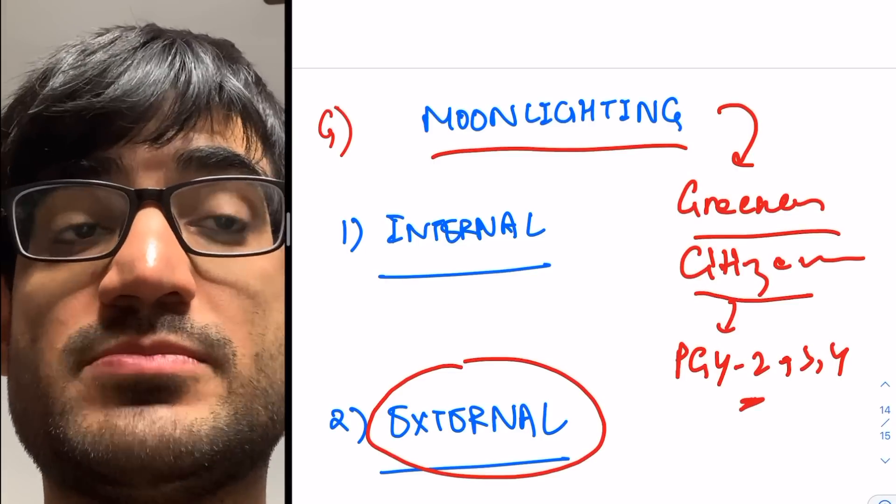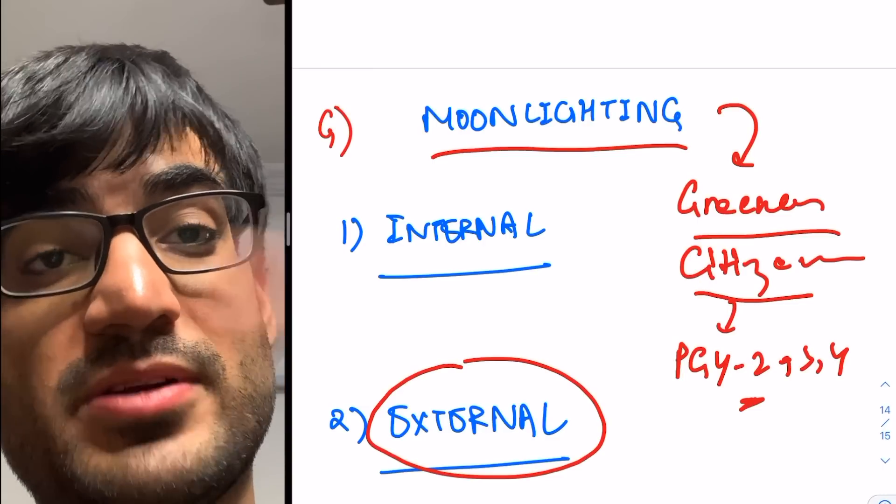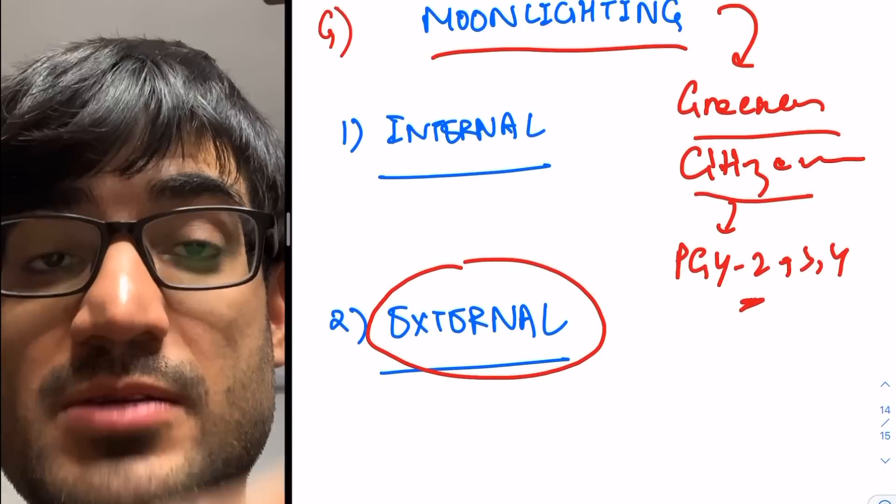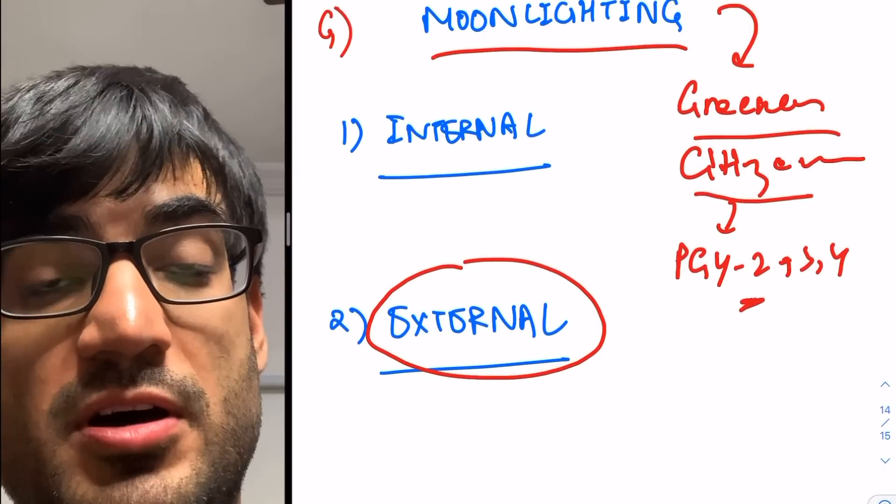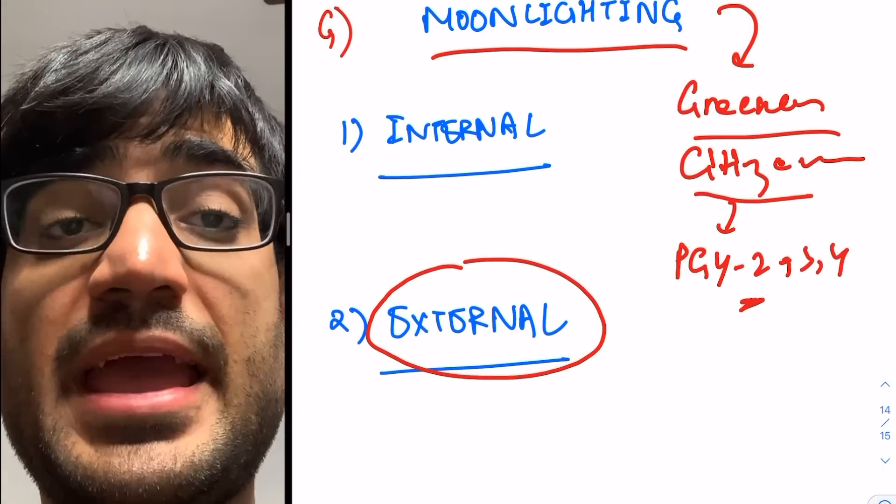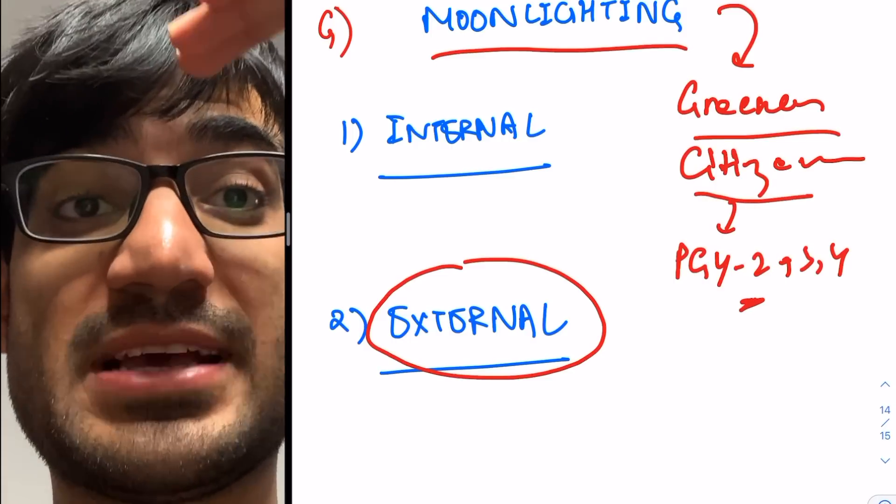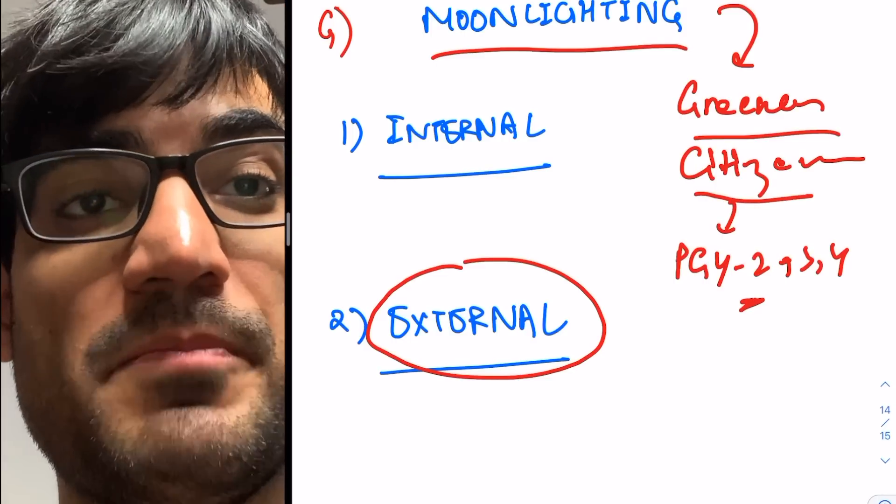And there are two kinds of moonlighting, internal and external. Internal moonlighting happens within the same hospital, in the same department or in a different department. External moonlighting happens outside of the whole hospital. So you can be paid. Also, if you are working extra hours other than your residency training program and your residency is asking you to work those extra hours, you can be sometimes compensated for that.